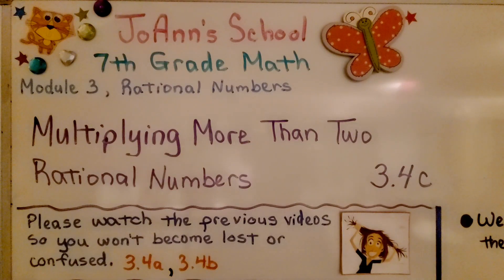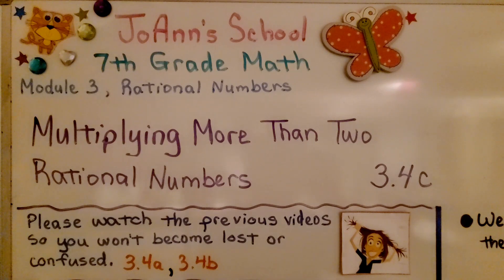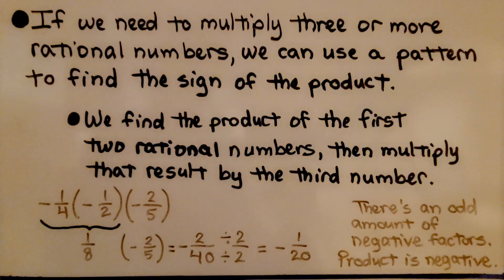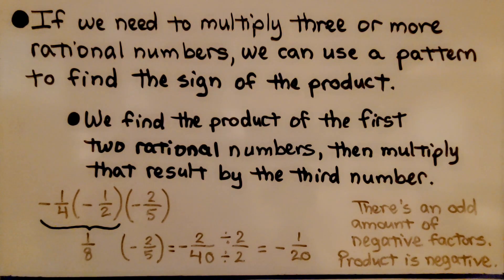We're at lesson 3.4c. We're multiplying more than two rational numbers. If we need to multiply three or more rational numbers, we can use a pattern to find the sign of the product.